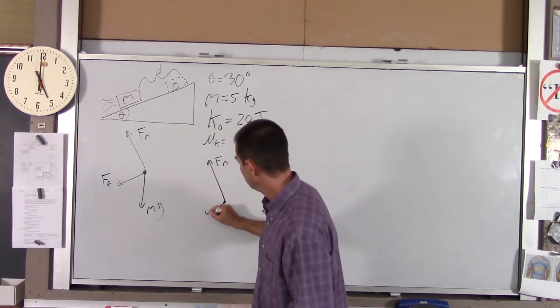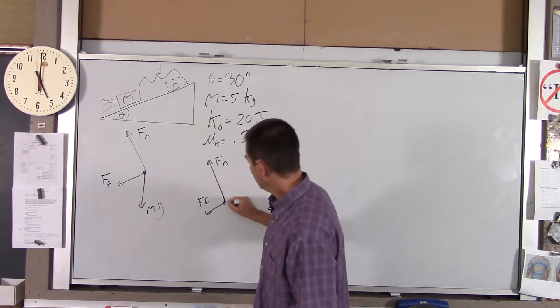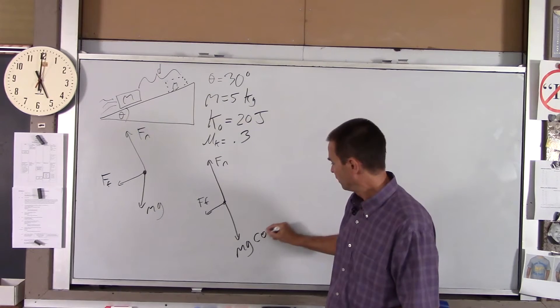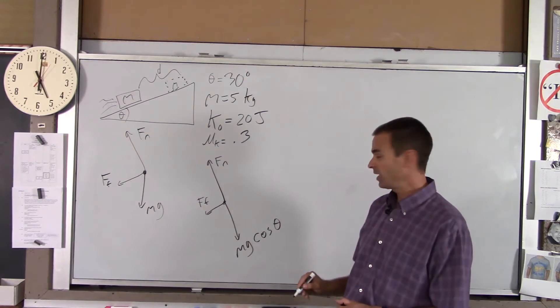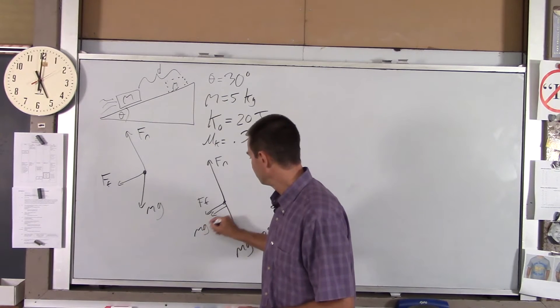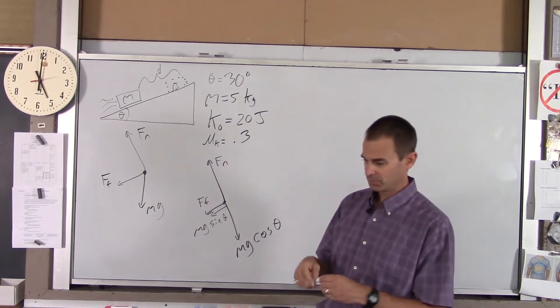So I'll redraw this in component form. FN's all good. FF is all good. This component of gravity is Mg cosine of the angle, and this component of gravity is Mg sine of the angle.